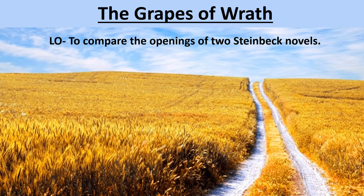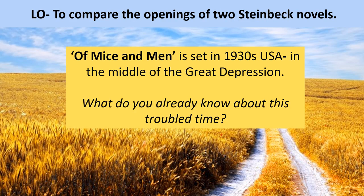Moving on to lesson two of week one. This lesson, we're going to be comparing the openings of two Steinbeck novels — Of Mice and Men and The Grapes of Wrath. And no, it is not about angry fruit. As we said last lesson, Of Mice and Men is set in the 1930s in the middle of what was known as the Great Depression. Think about the date of around the 1930s. What other significant world events are happening around this time? Pause for a second — can you think of maybe three things that are happening in the world around the 1930s?